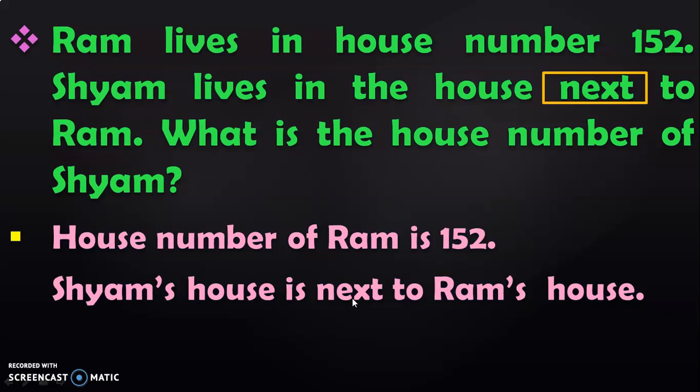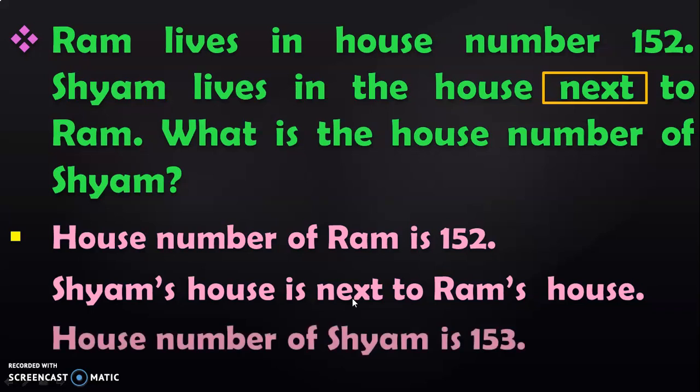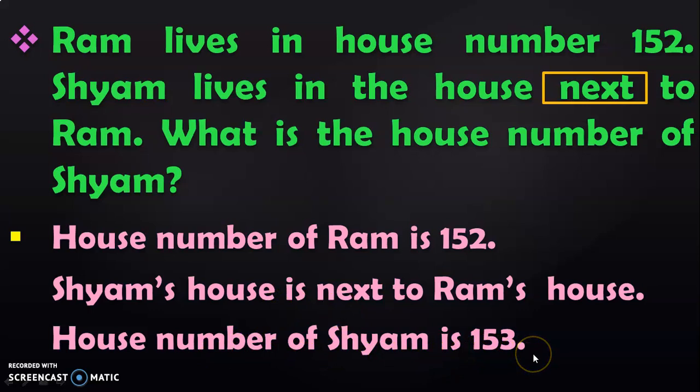What is the number which is next to 152? The after number of 152 is 153. So the answer is: house number of Shiam is 153.